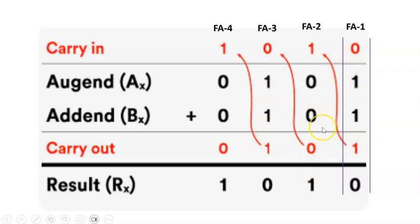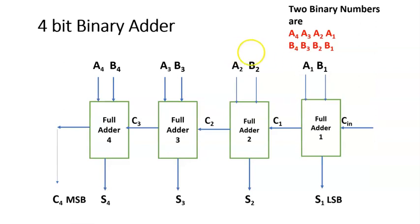Once you understand this basic example, how to implement it using a logic diagram — since each column represents 1 full adder, how many full adders will we require? We will be requiring 4 full adders: full adder 1, full adder 2, full adder 3, full adder 4. Each of these full adders represents one column of the earlier slide.